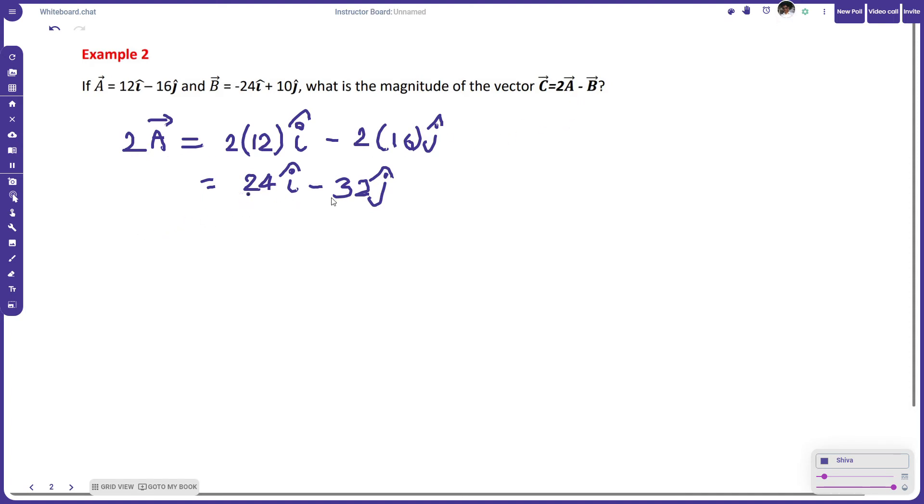So this is 2a and we have to subtract b from it. Let me write this: 2a minus b is equal to... and we are substituting b here, that is 24i plus 10j.